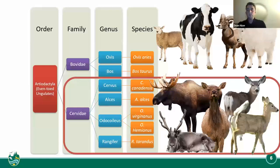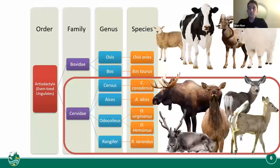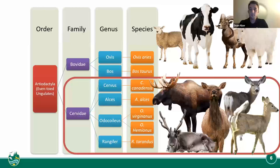Chronic wasting disease is species-specific — it affects only the cervidae family. So it only affects moose, elk, deer, and caribou, including both species of deer: whitetail and mule deer.